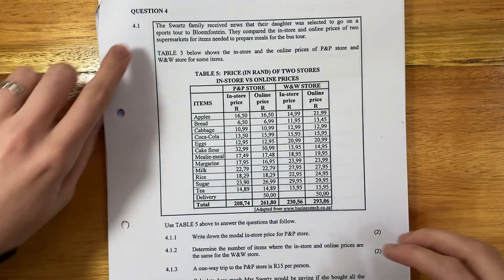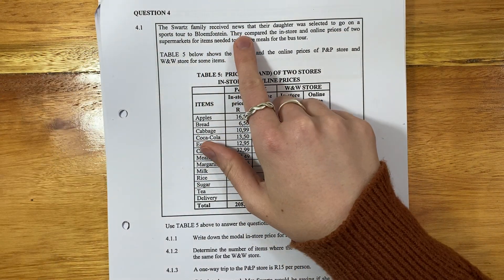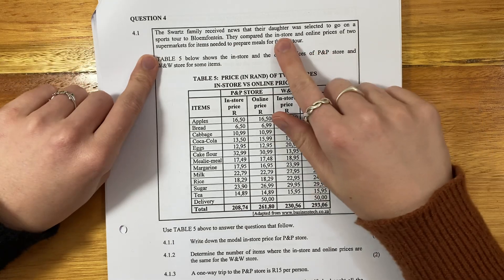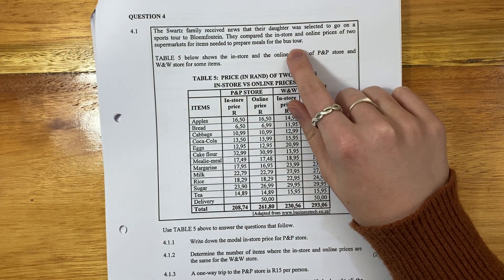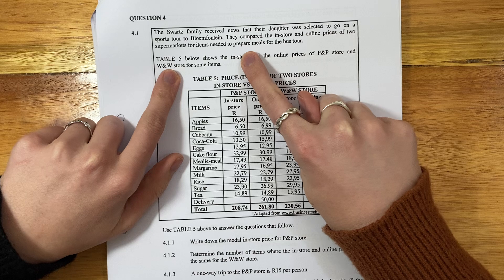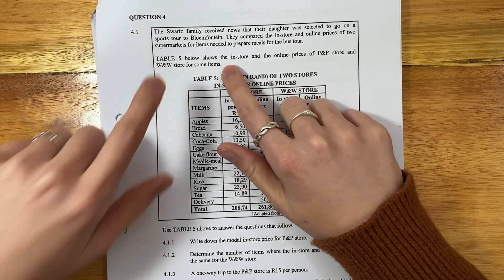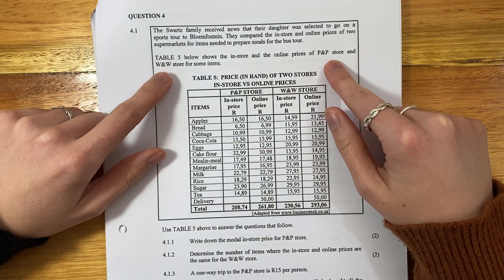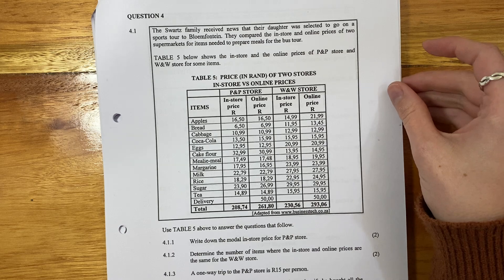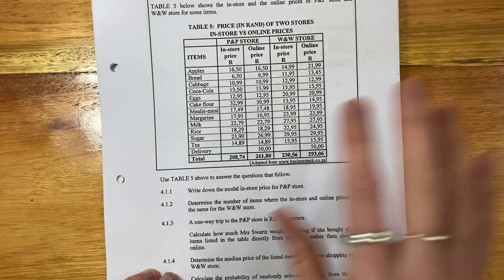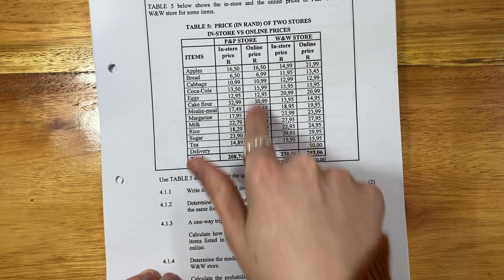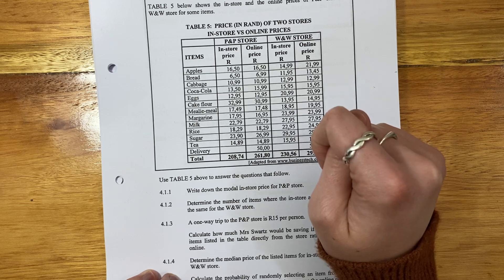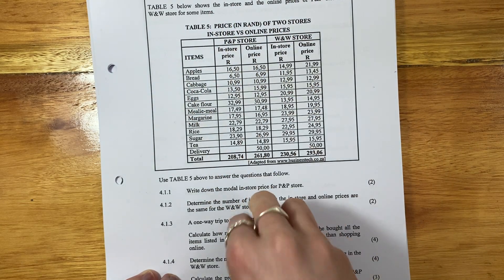Let's look at question four. The Swartz family received news that their daughter was selected to go on a sports tour to Bloemfontein. They compared the in-store and online prices of two supermarkets for items needed to prepare meals for the bus tour. Table five shows the in-store and online prices of P&P store and W&W store. It's probably Pick n Pay and Woolworths. Here's the items in-store, online for P&P and then in-store, online for W&W. Don't spend too much time here, move on to the questions.